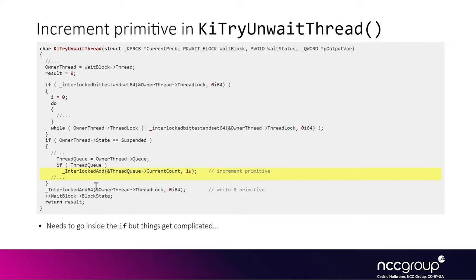The main challenge is that there are a lot of code paths we need to deal with after the increment happens, so that we can actually return to the vulnerable function without crashing. We do need to return to the vulnerable function at some point, and so we'll see that the big difference between the write-zero primitive and the increment primitive is that for the increment primitive, because we're going into this if loop, we need to set lots of fields.